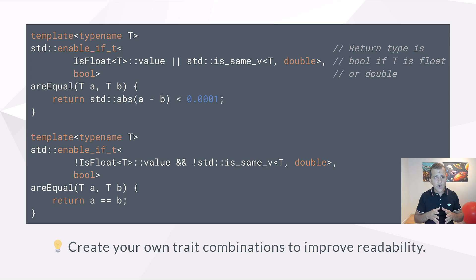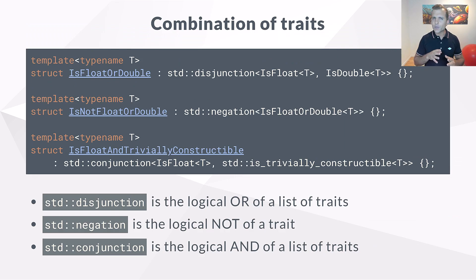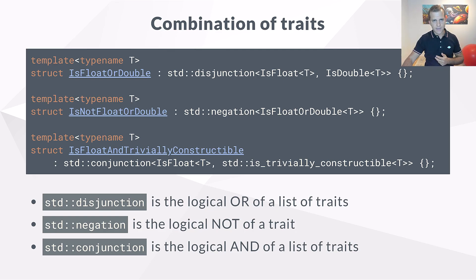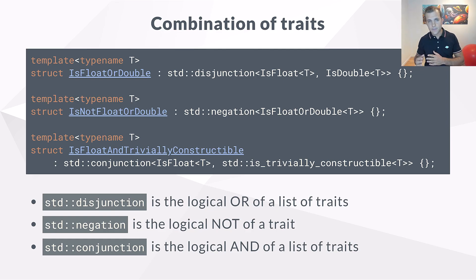You will very often have to create your own traits and trait combinations to achieve what you want. Here are some traits that combine other traits. The first one, float_or_double, combines the isFloat and isDouble traits using disjunction — the logical OR of template metaprogramming. is_not_float_or_double is the negation of the previous trait. isFloat_and_trivially_constructible uses conjunction — the logical AND for a list of types. The benefit of creating these custom traits is readability and reusability.